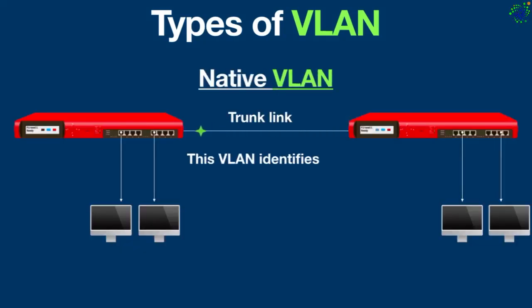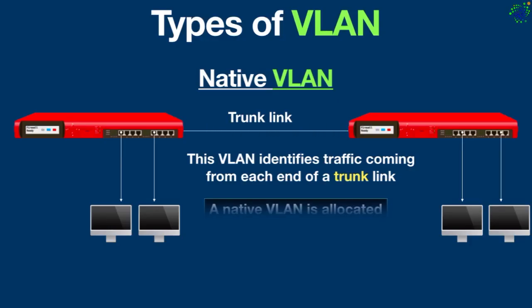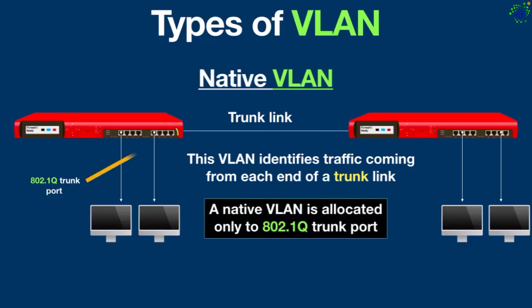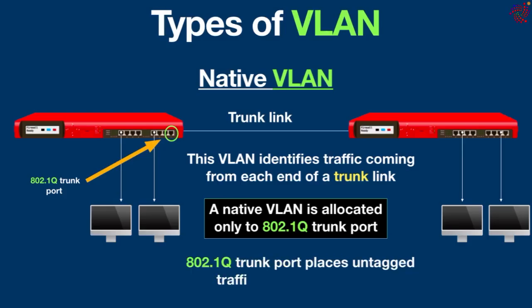Native VLAN identifies traffic coming from each end of a trunk link. A native VLAN is allocated only to an 802.1Q trunk port. This trunk port places untagged traffic on the native VLAN. Untagged traffic is traffic that does not come from any VLAN. It is best to configure the native VLAN as an unused VLAN. Native VLAN is like letting a visitor wait in a designated area until you decide where they can go.